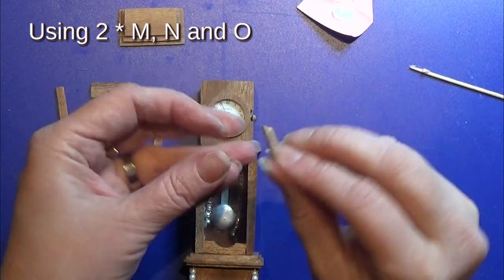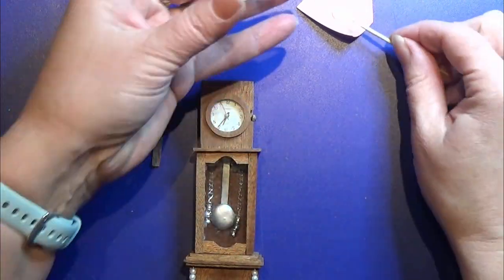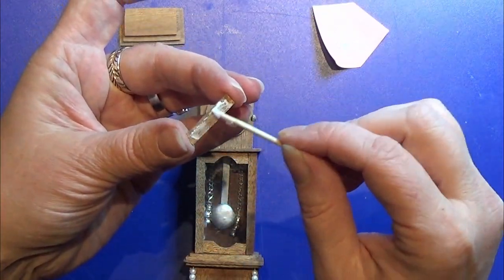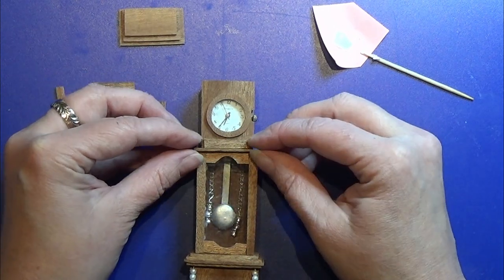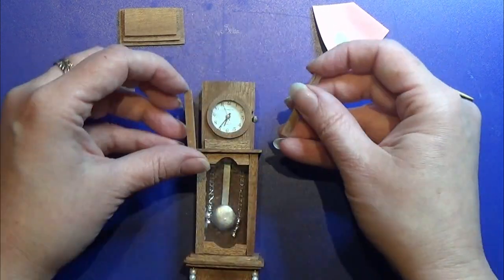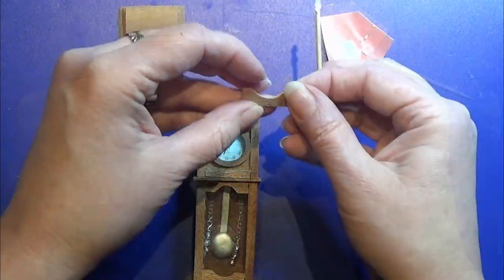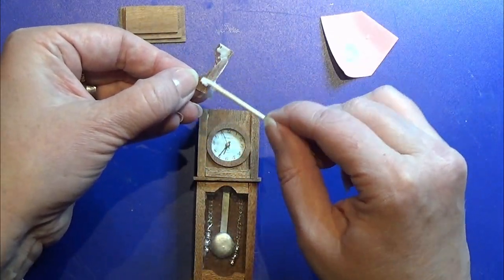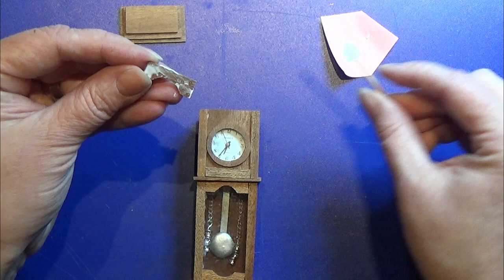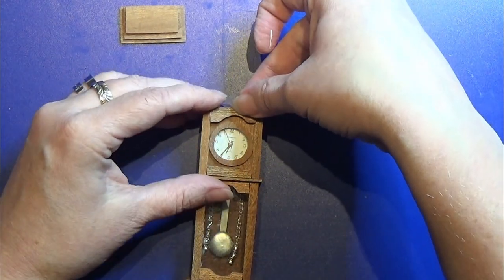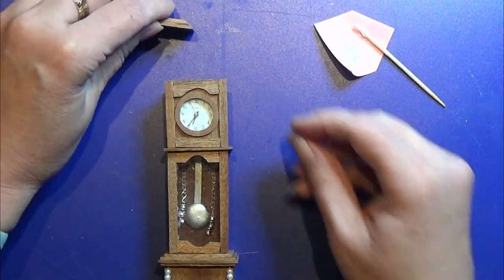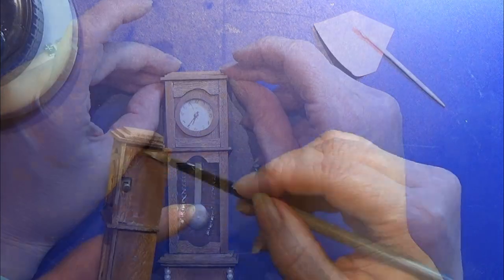I'm gluing the end piece in place, then the two M pieces. And I have made this little bow in the O piece that I am gluing on here, and then I'm gluing the piece we just made on top of it all.